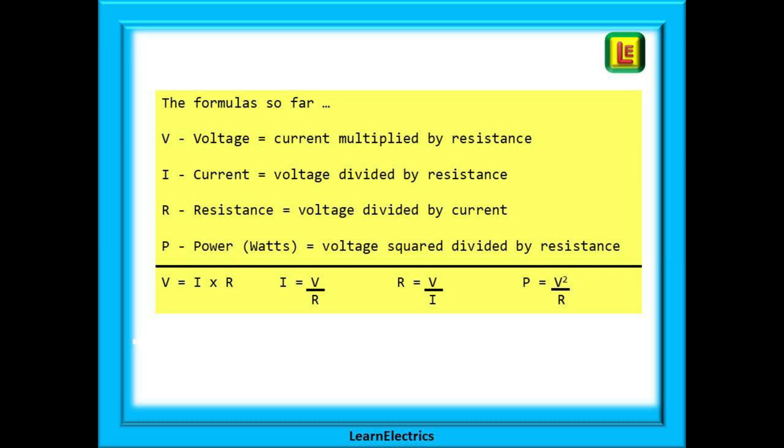For now let's look at the formulas so far. We can calculate the voltage in a circuit from Ohm's law and we can use Ohm's law to tell us the current flowing in that circuit. A slight rearrangement of the formula and we can calculate the resistance. And then there's the power in the circuit, the wattage, which we can determine from the voltage and the resistance.